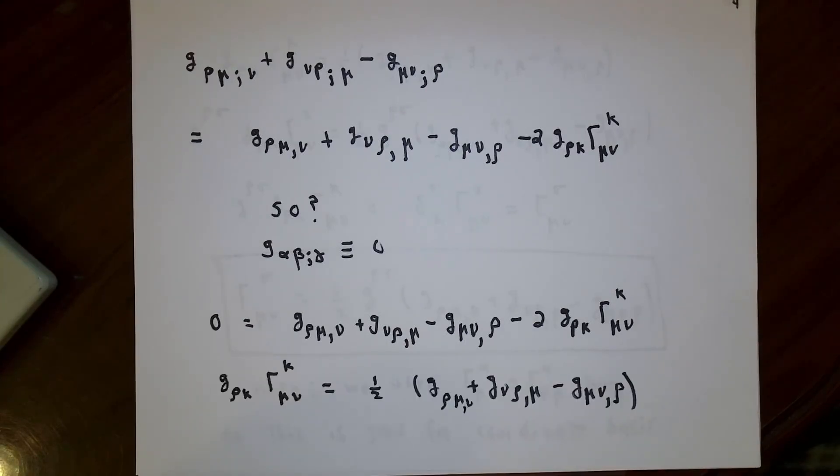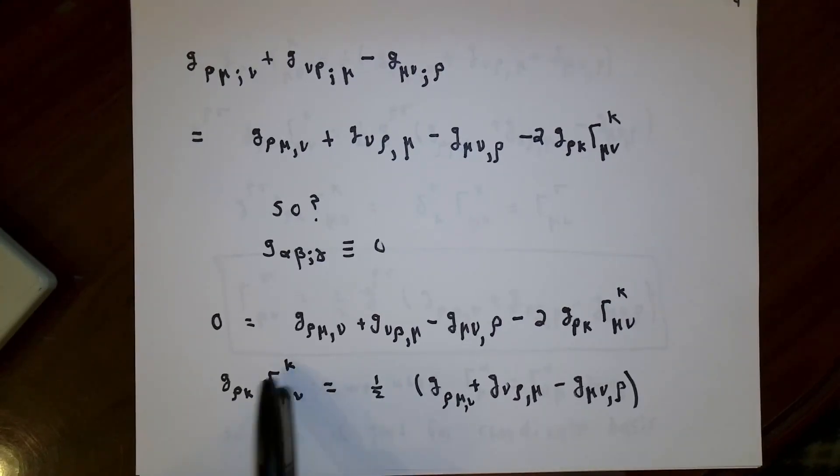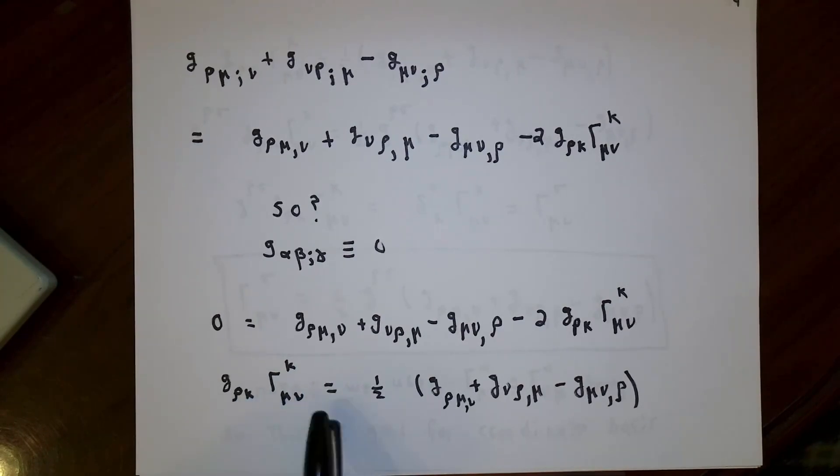To get the Christoffel symbols in terms of the metric tensor and the components of the metric tensor, all we've got to do is somehow get rid of this G_ρκ. We have to be a little bit careful now. κ is an index of summation. So this is a sum of Christoffel symbols equaling something that we could calculate if we knew what the metric tensor was.